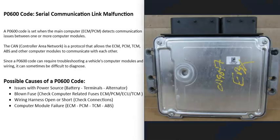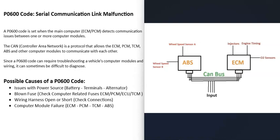Modern vehicles have a lot of computers built into them. They could have an engine control module, a powertrain control module, a transmission control module, an anti-lock brake system control module, and so on. Each one of these control modules does a different thing, and there can be differences between vehicles in what control modules they have, how many there are, and how they're named.